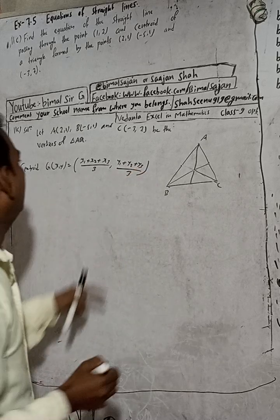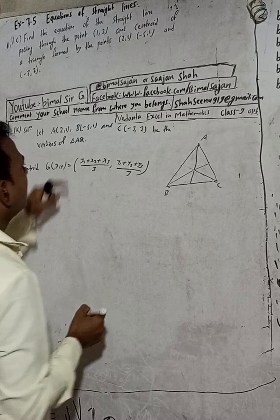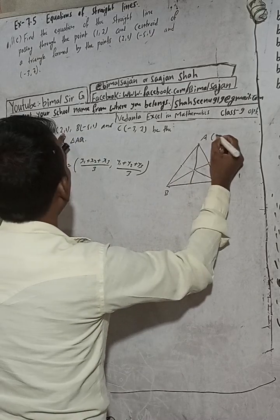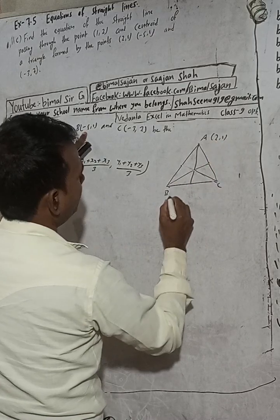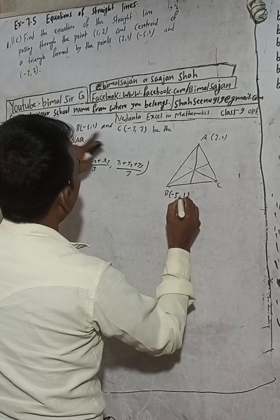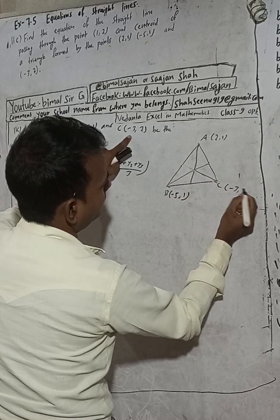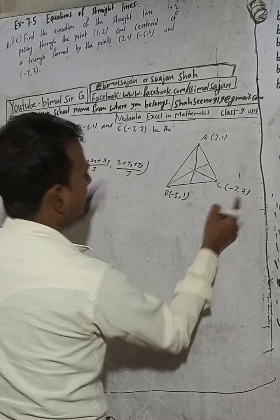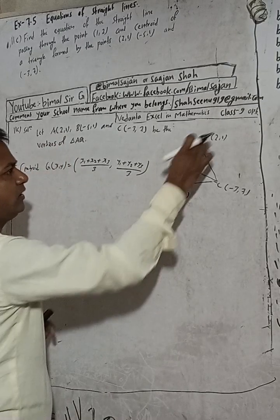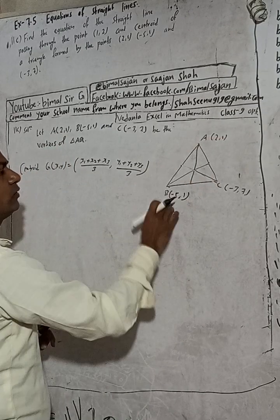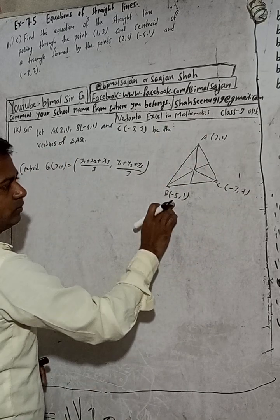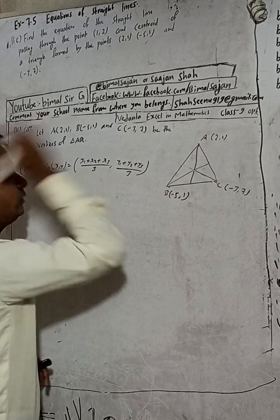Our points are: A = (2, 1), B = (-5, 1), and C = (-3, 7). We can consider these as (x1, y1), (x2, y2), and (x3, y3) respectively.